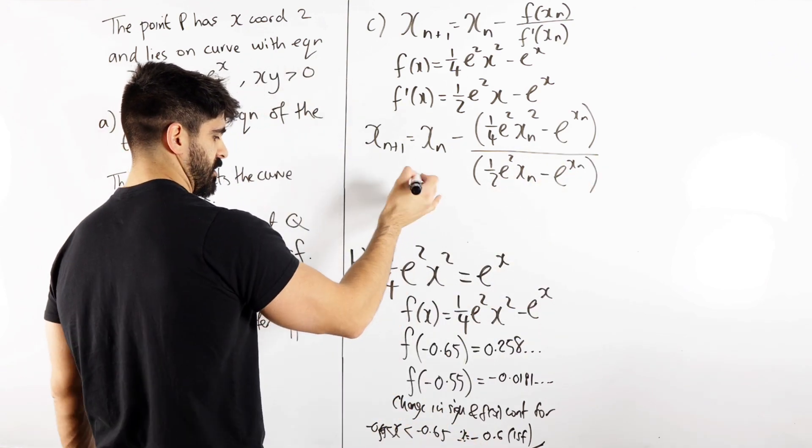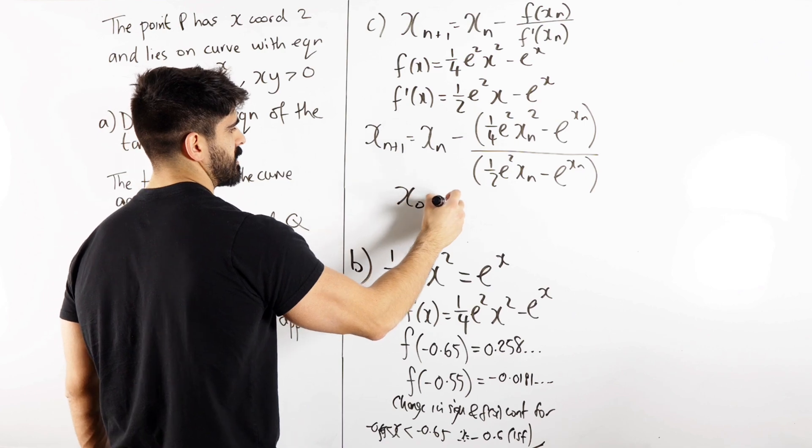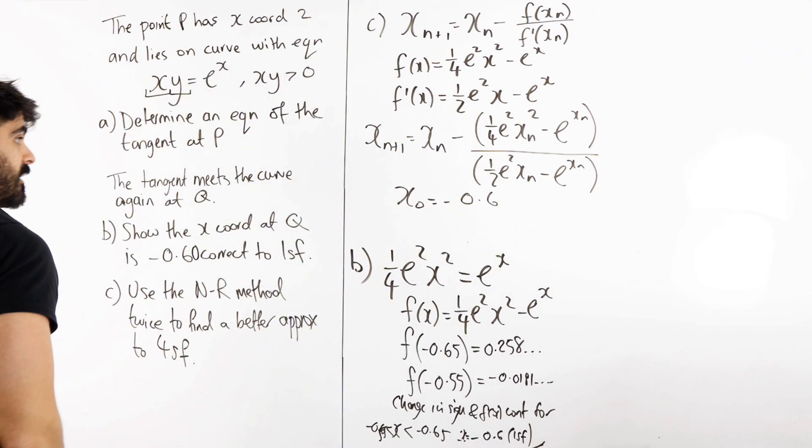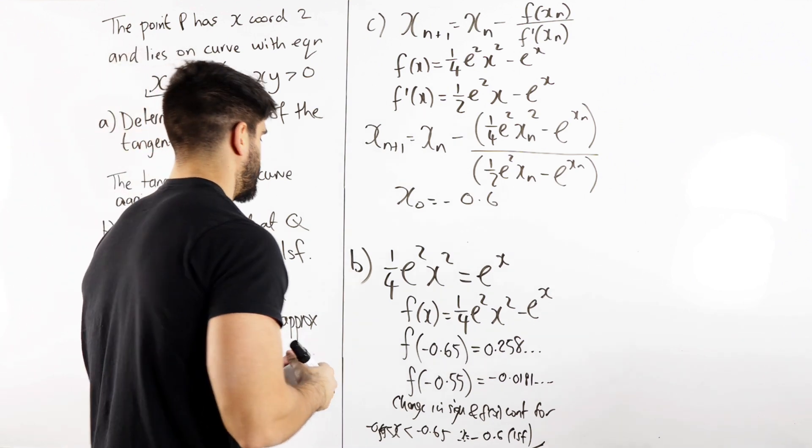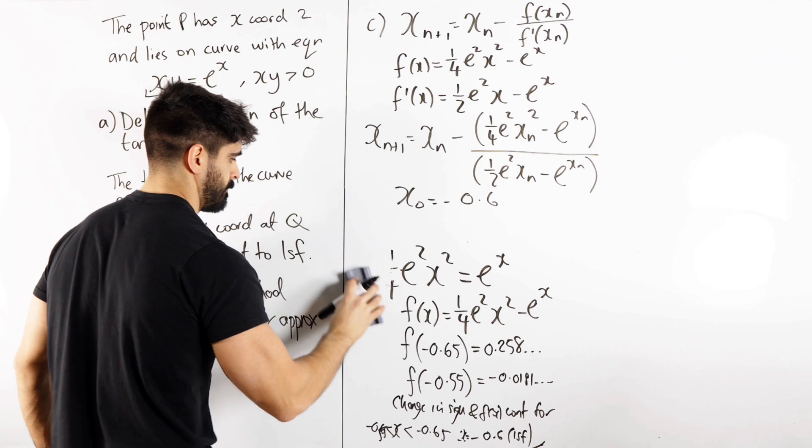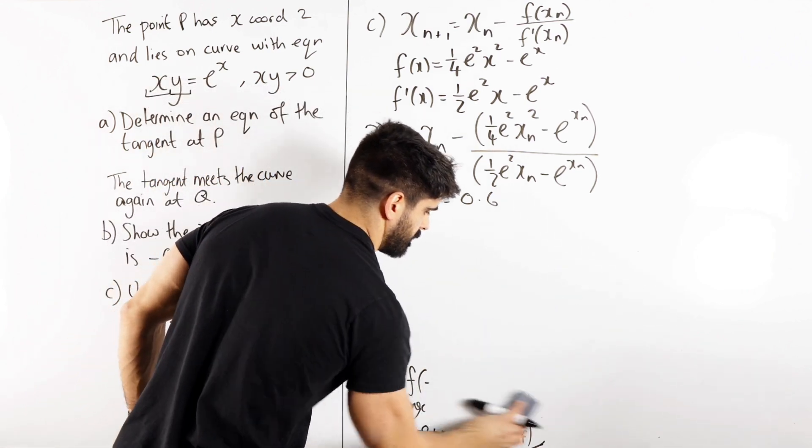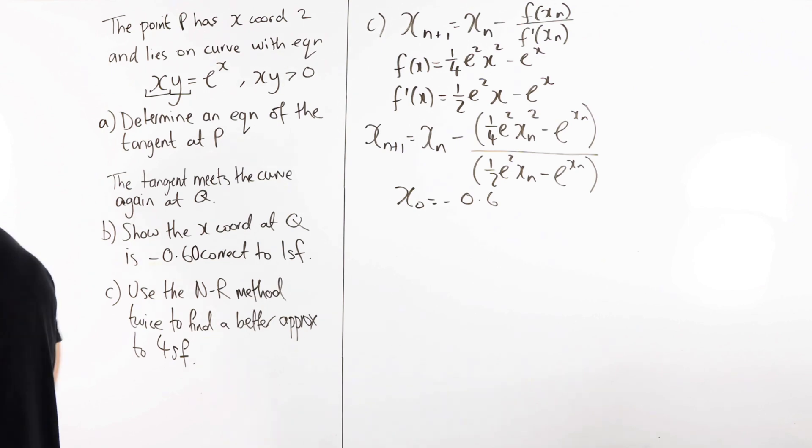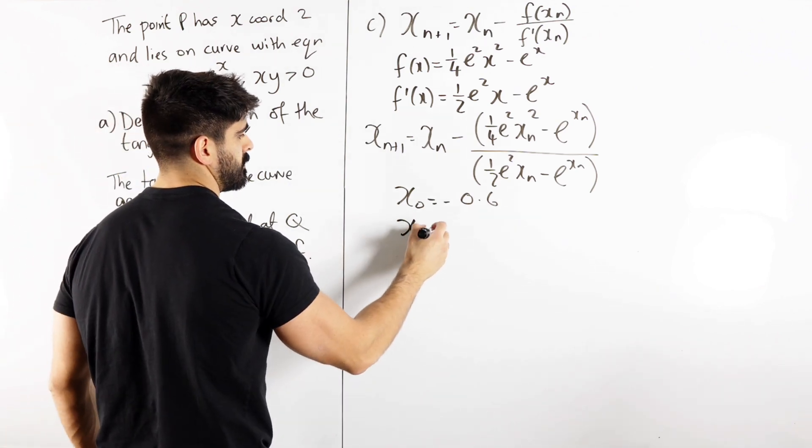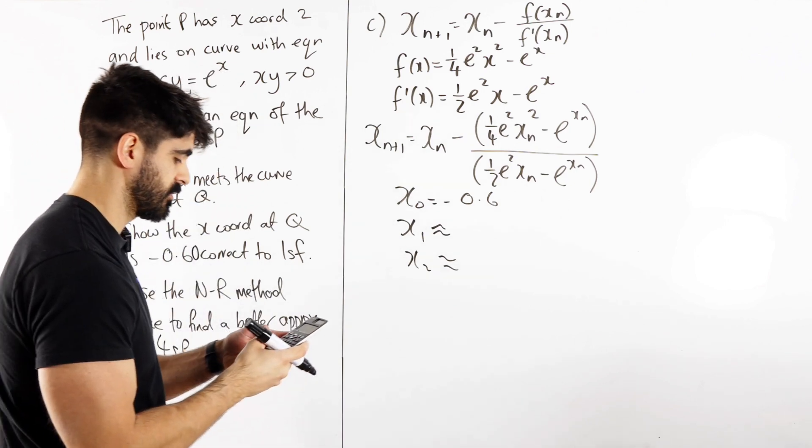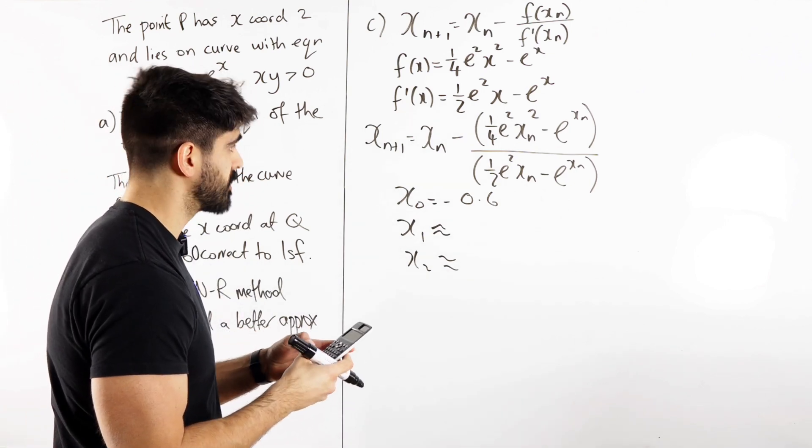Okay, so we're starting off with x0 is minus 0.6, and they only want us to do it twice, which is nice. Why did I put my calculator down? So if they want us to do it twice, just prepare for that. Don't need this information anymore. We only need x1 and x2, and do it to 4 significant figures. So I'm going to do minus 0.6 equals answer equal.